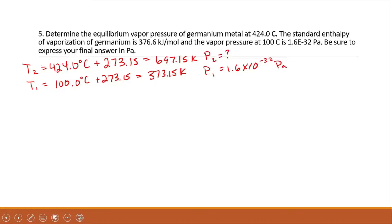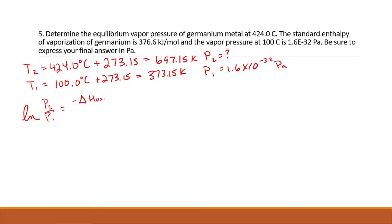We don't need to change the units of our pressure because in the equation — ln(P2/P1) equals negative delta H_vap over R times (1/T2 minus 1/T1) — the ratio of the pressures means the units cancel out. So we can leave our pressure in terms of pascals.